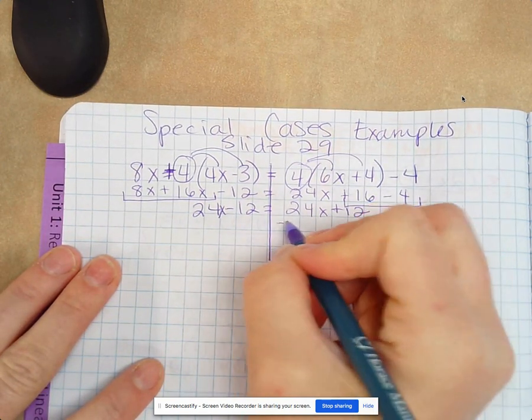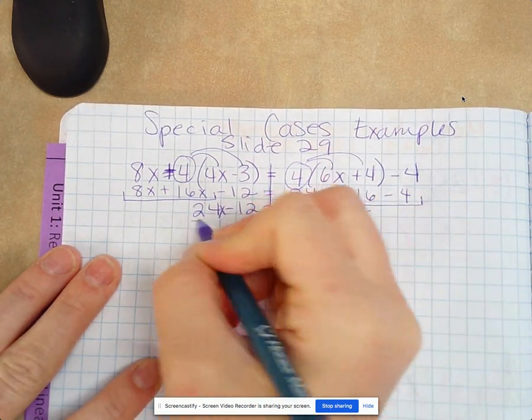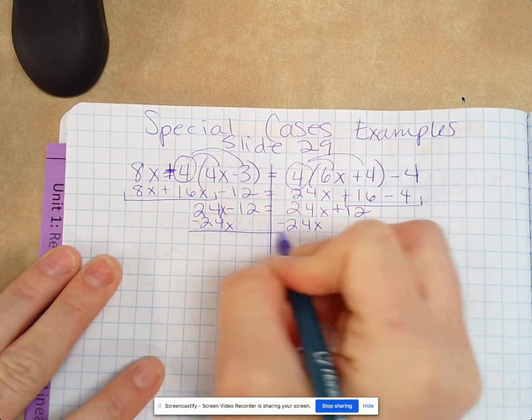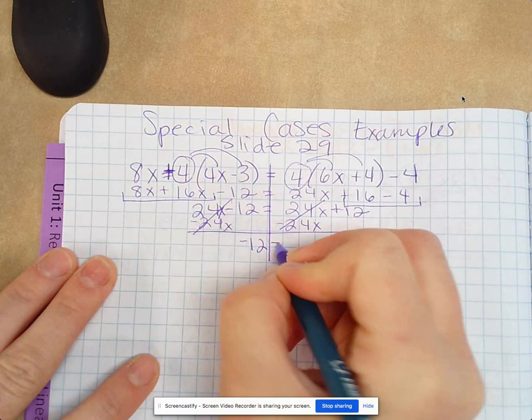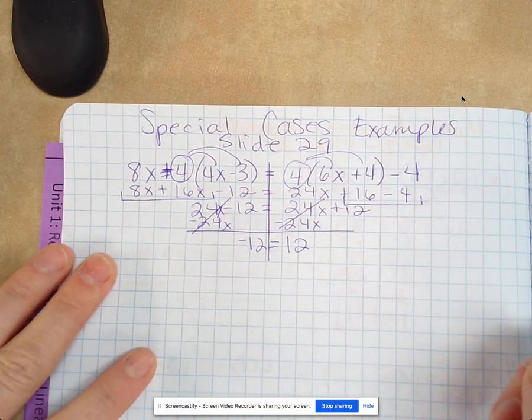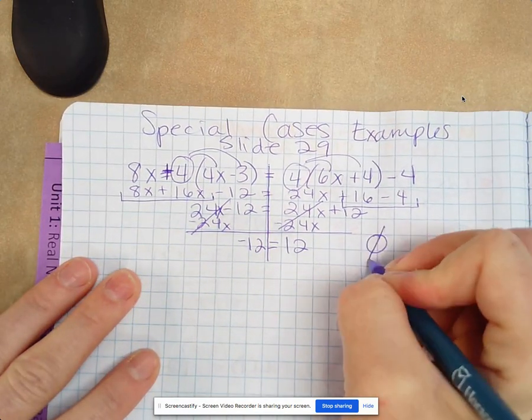Then we need to get the x on the same side, so minus 24x. That actually cancels and we get negative 12 equals 12. And that is not true, so it is no solution.